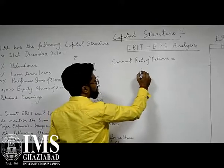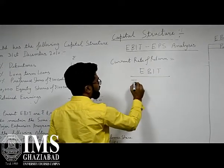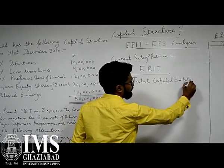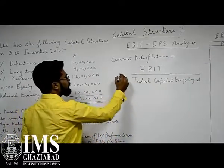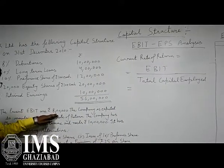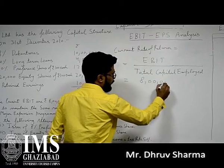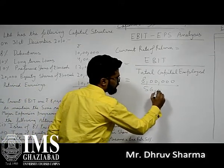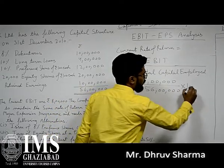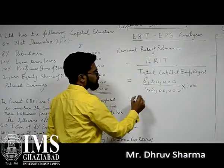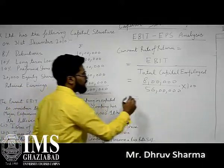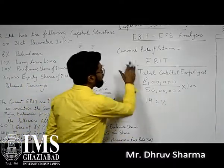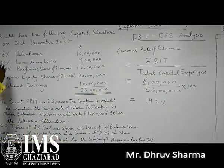We are using a formula: EBIT divided by total capital. We have an EBIT of rupees 8 lakh, divided by the existing capital structure of 56 lakh, multiplied by 100. So we are dividing 8 lakh by 56 lakh and we get 14.2%. This is our present current rate of return for the company's existing capital structure.